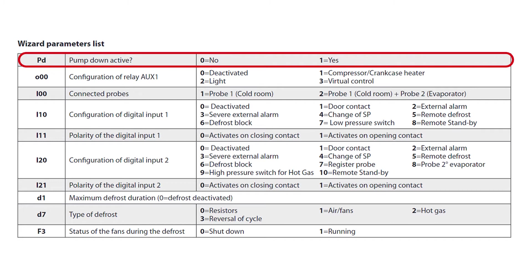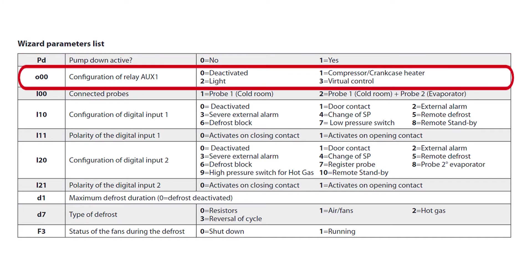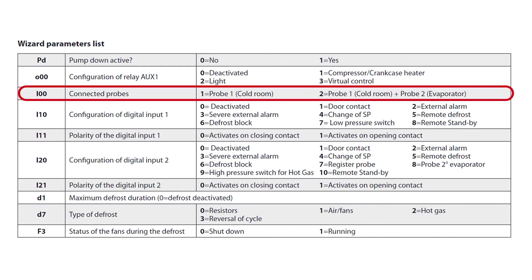In other words, the low pressure control will be controlling the compressor directly. Next, we see that O00 is 1, which tells us that relay auxiliary 1 will open and close on a call for cooling if the normally closed and normally open contacts are used. However, we will not need these contacts, as we will once again be controlling the compressor with the low pressure control. I00 tells us that the required number of temperature probes will be 2 — in our case, we will be using a second temperature sensor on the evaporator because we have temperature terminated defrost.